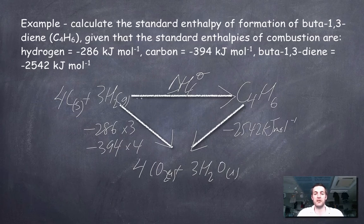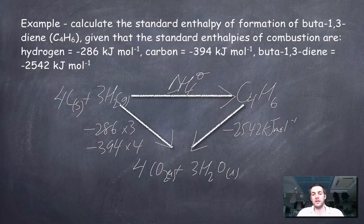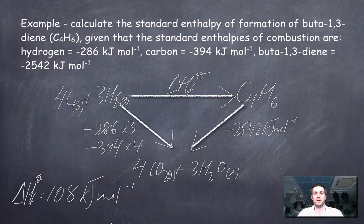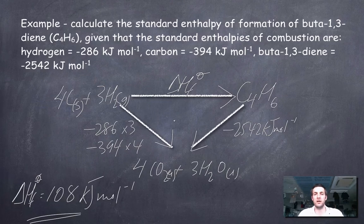So now I can find the standard enthalpy of formation of buta-1,3-diene by adding the combustion enthalpies of the elements and subtracting — going against that arrow — minus −2542. That gives me 108, so the standard enthalpy of formation equals +108 kJ/mol. I could have used the formula, but I'm showing how to construct a cycle using definitions. This is a really important skill, as we'll see shortly, because the next question has a bit of mix and match to it.